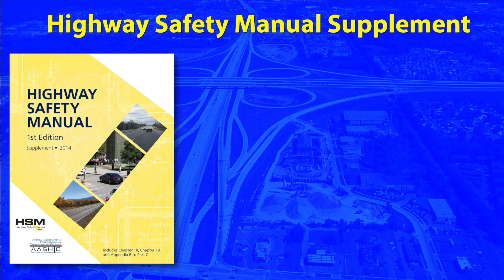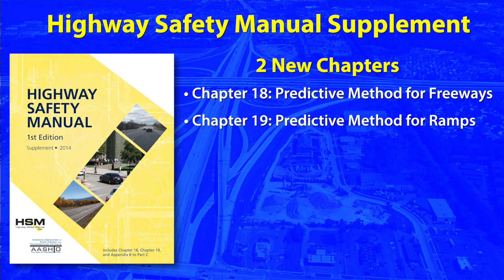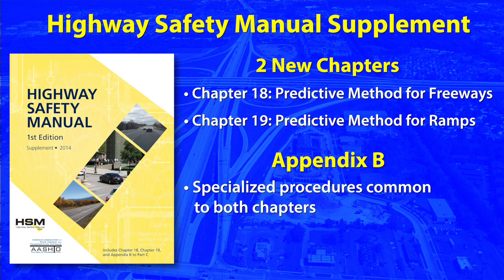Building upon the predictive method established in the Highway Safety Manual, this supplement includes two new chapters: Chapter 18, Predictive Method for Freeways; Chapter 19, Predictive Method for Ramps; and Appendix B, which provides specialized procedures common to both.